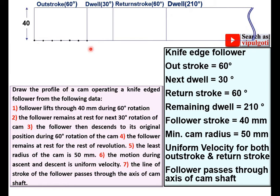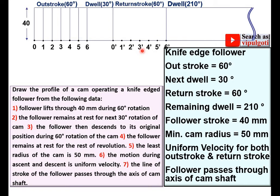Now divide the outstroke into 6 equal parts and give the names 0, 1, 2, 3, 4, 5, 6. Draw vertical lines passing through all these points. Similarly, for the returnstroke, divide it into 6 equal parts and give the names 0', 1', up to 6'. Draw vertical lines passing through all these points.